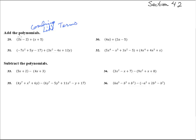Here we have a 3x and an x, that makes 4x. Negative 2 and a plus 5, that gives us a plus 3.